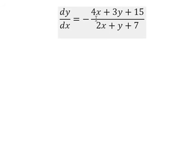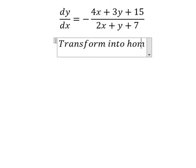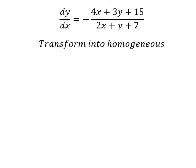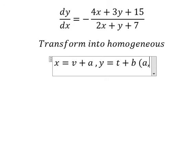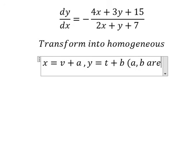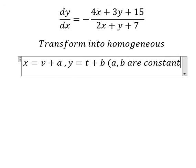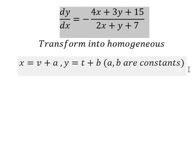We want to transform this equation into homogeneous form. In this situation, I will put S equals to V plus A and Y equals to T plus B, where A and B are constants. So we do the first derivative for both sides.